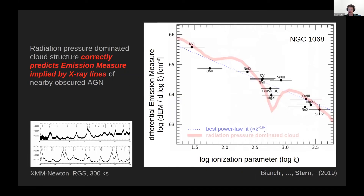We can go further and compare the observed X-ray emission line ratios with the predictions of radiation-pressure-dominated clouds. In work led by Stefano Bianchi, he measured the emission line fluxes in X-ray spectra of nearby obscured quasars, calculated the implied emission measure distribution for different ionization parameters of the emitting gas, and these observations are very consistent with the predictions of radiation-pressure-dominated clouds. This provides very strong evidence that in these systems the dominant coupling mechanism between the quasar and the ISM is radiation pressure.